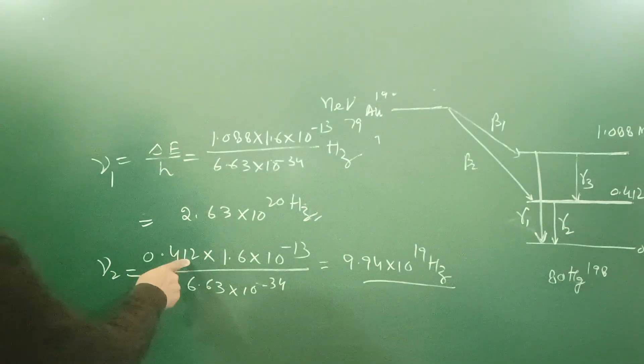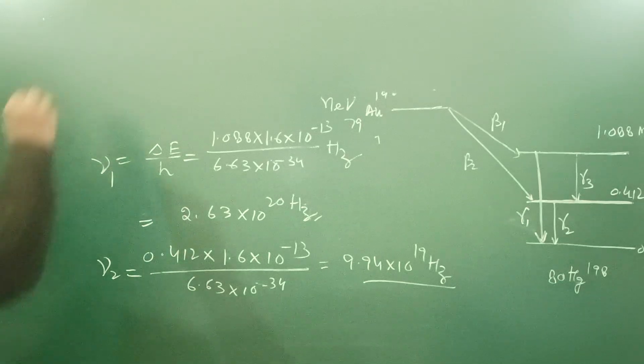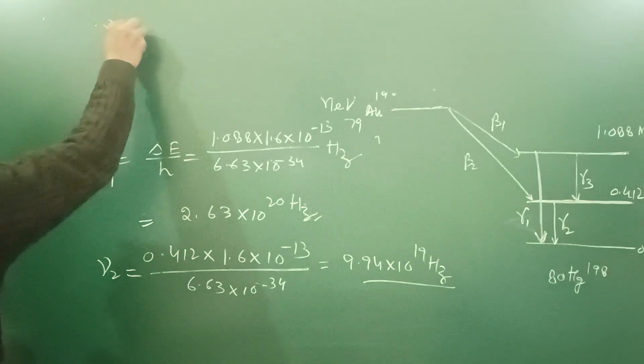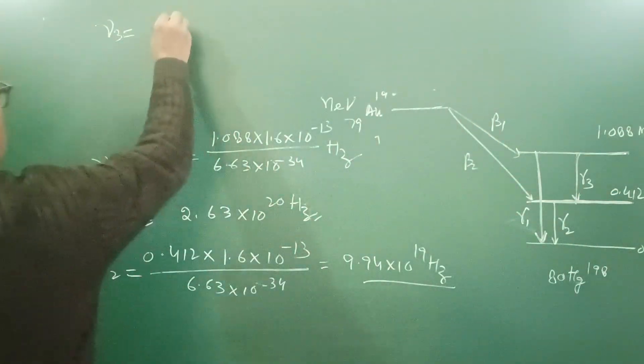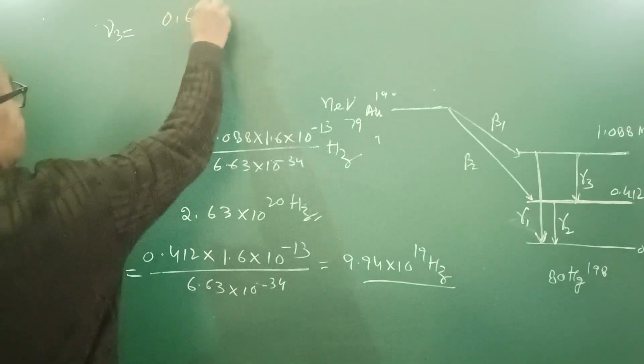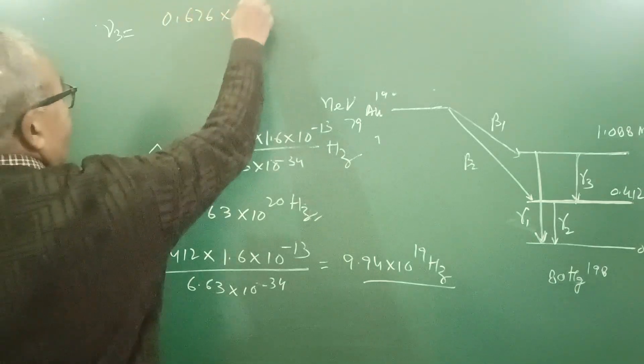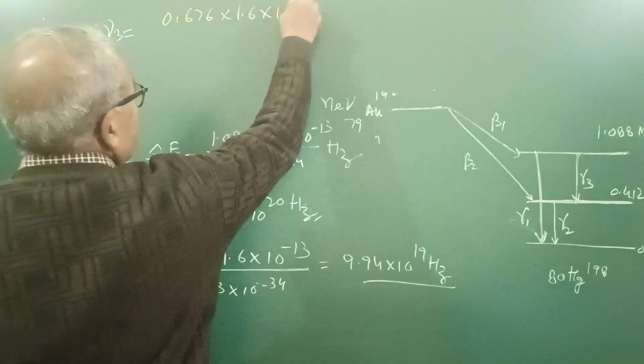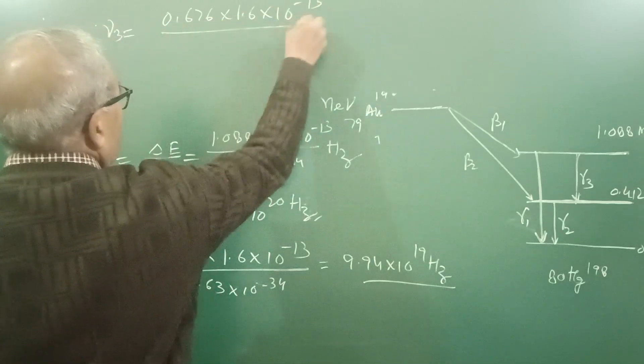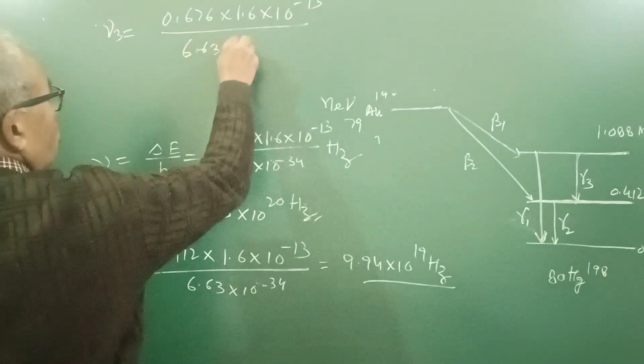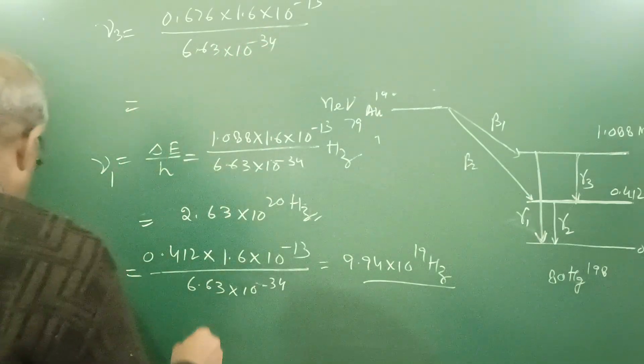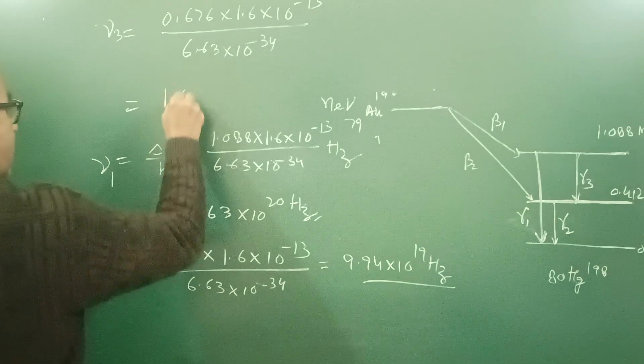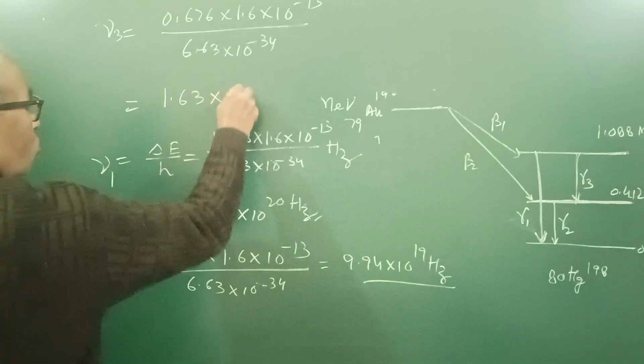Then nu 3, this will be, it comes out 0.676 times 1.6 times 10 to the power minus 13 upon 6.63 times 10 to the power minus 34, and it is coming here 1.63 times 10 to the power 20 hertz.